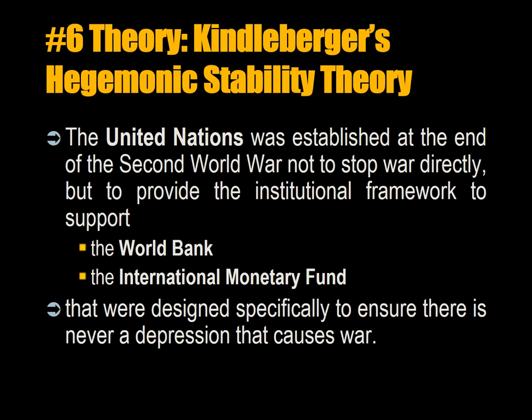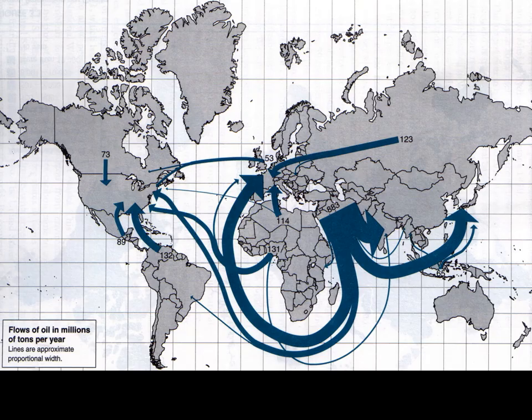The United Nations was established at the end of the Second World War not to stop war directly, but to provide the institutional framework to support the World Bank and the International Monetary Fund. These were designed specifically to ensure there was never a Great Depression again that would lead to fascist governments starting a war through radical foreign policies.